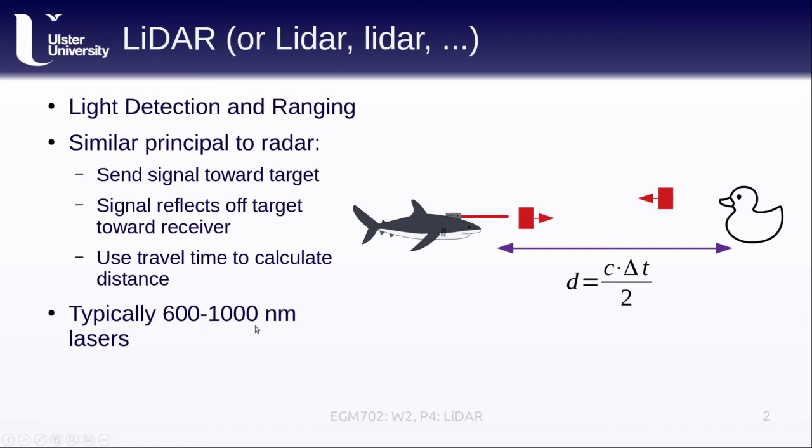And the wavelength of the sensor, much like what you discussed in EGM 713, is going to determine what we actually see or the properties of the signal that is returned by the target.